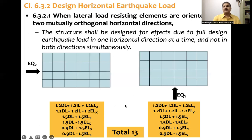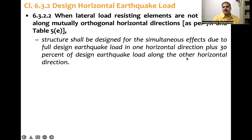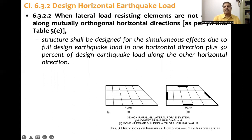Now, what if the lateral load resisting elements are not aligned orthogonally? The code states that when lateral load resisting elements are not oriented along mutually orthogonal horizontal directions, the structure shall be designed for simultaneous effects due to full design earthquake load in one direction plus 30 percent of the design earthquake load along the other horizontal direction.